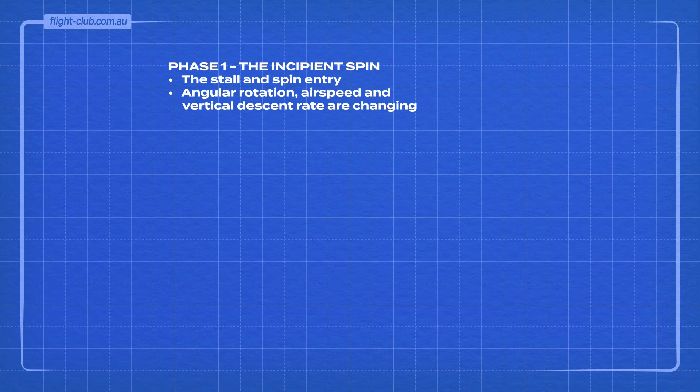There are three phases of a spin. Phase 1, the incipient spin. The incipient phase of a spin is the stall and spin entry. A developing spin exists when the angular rotation, airspeed, and vertical descent rate are changing.